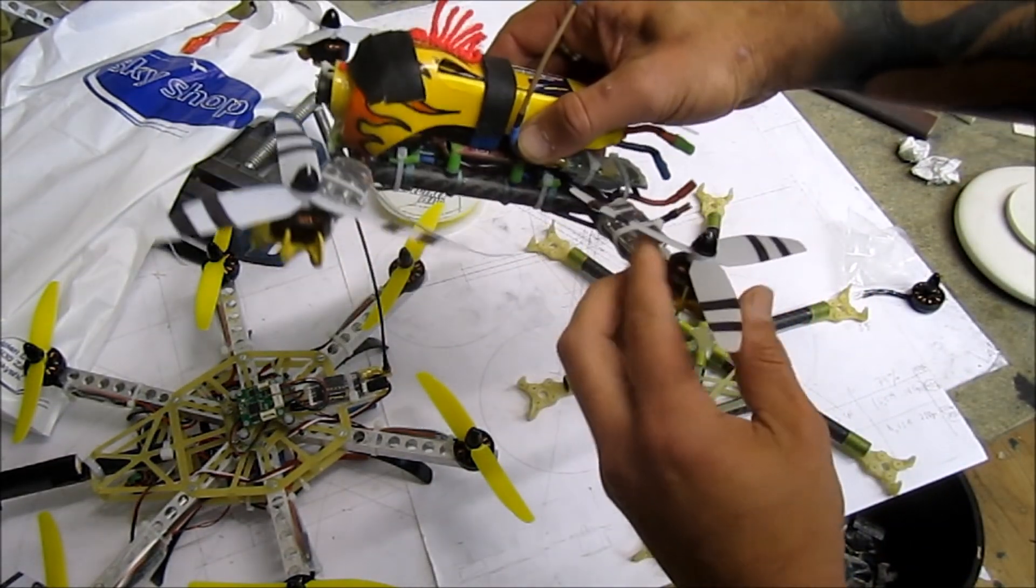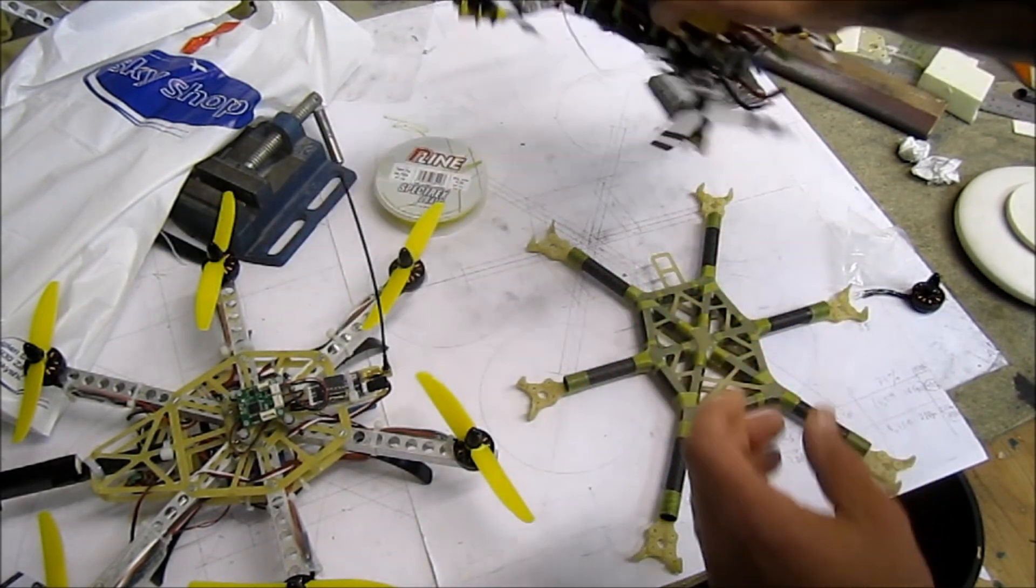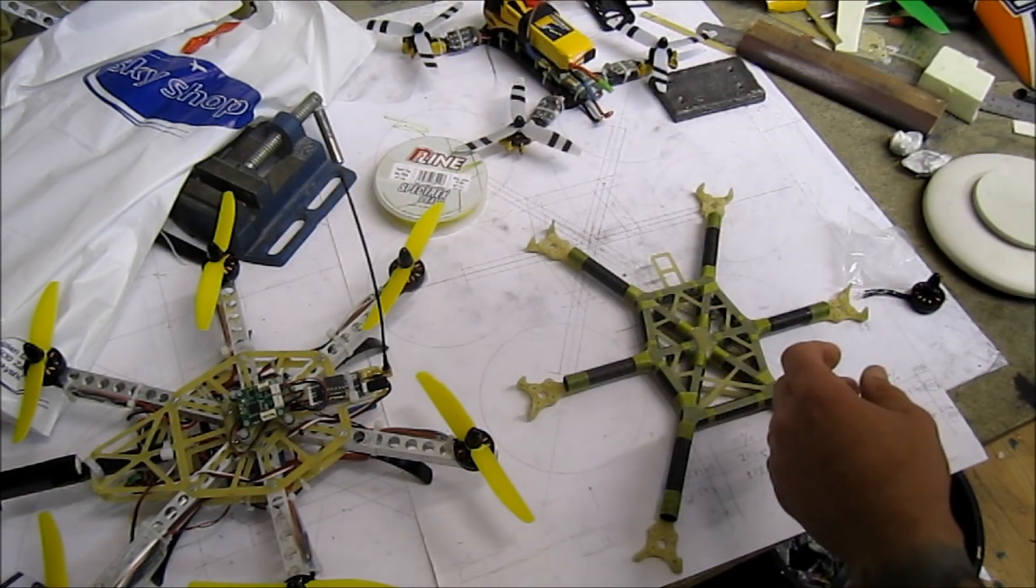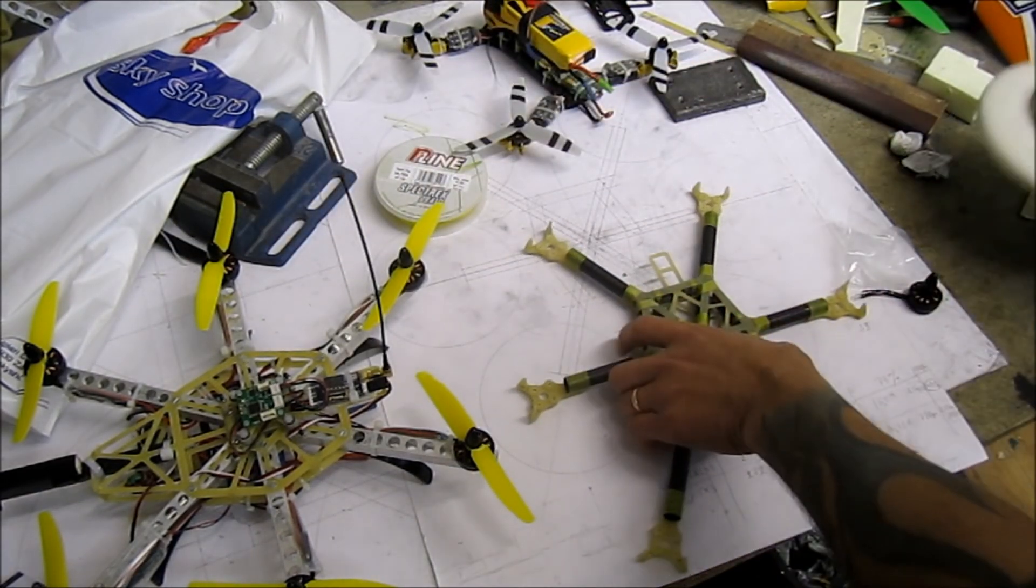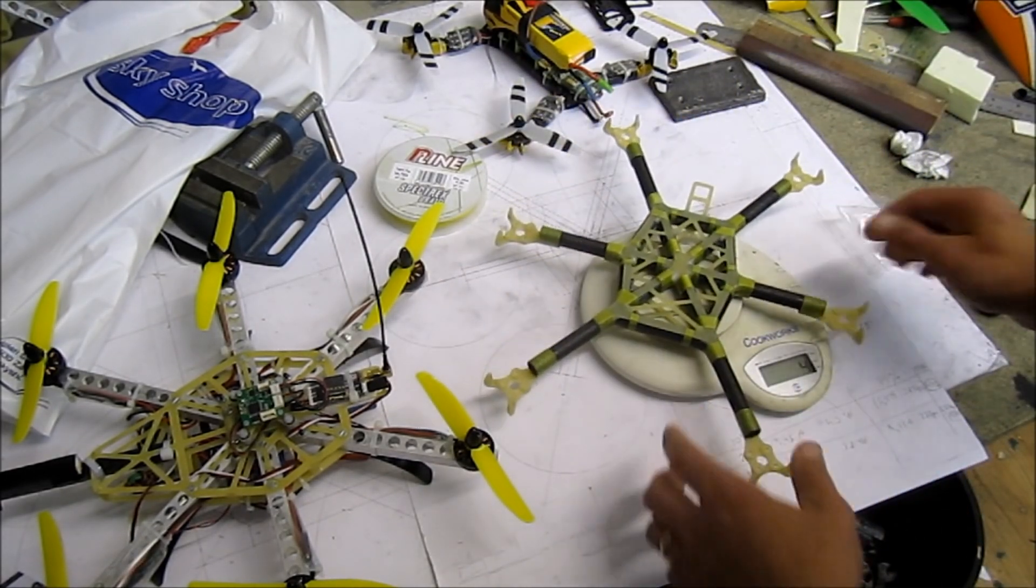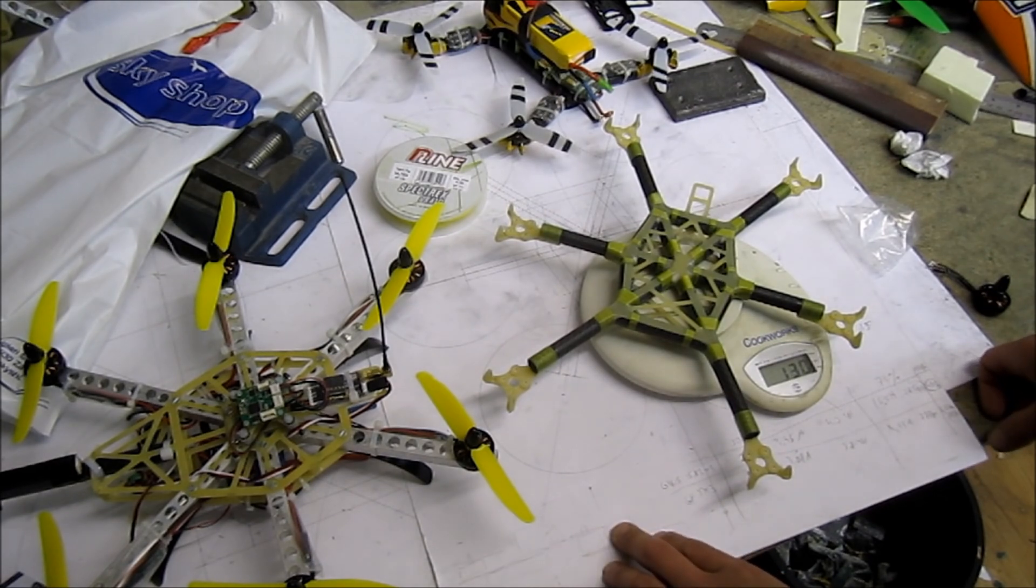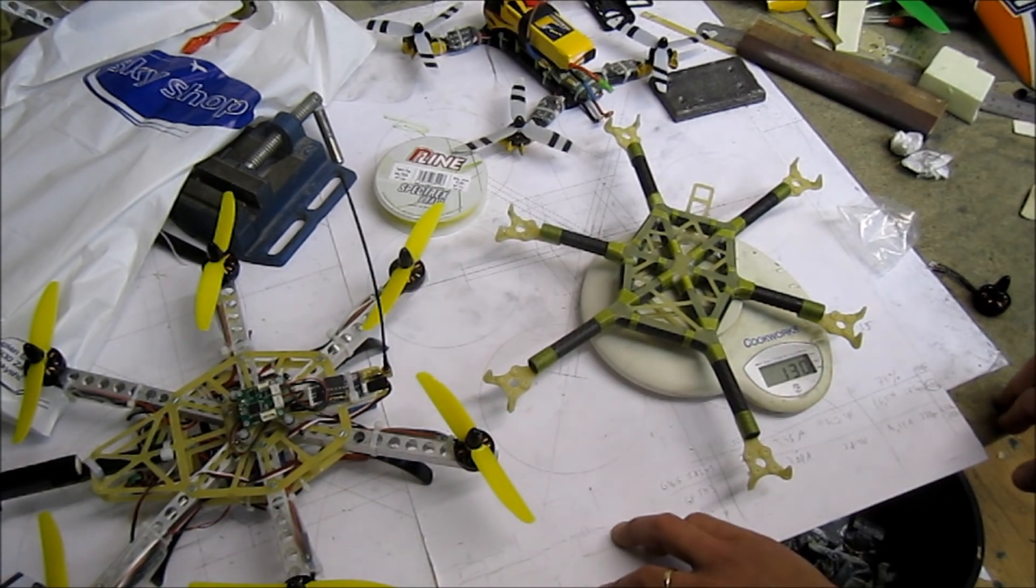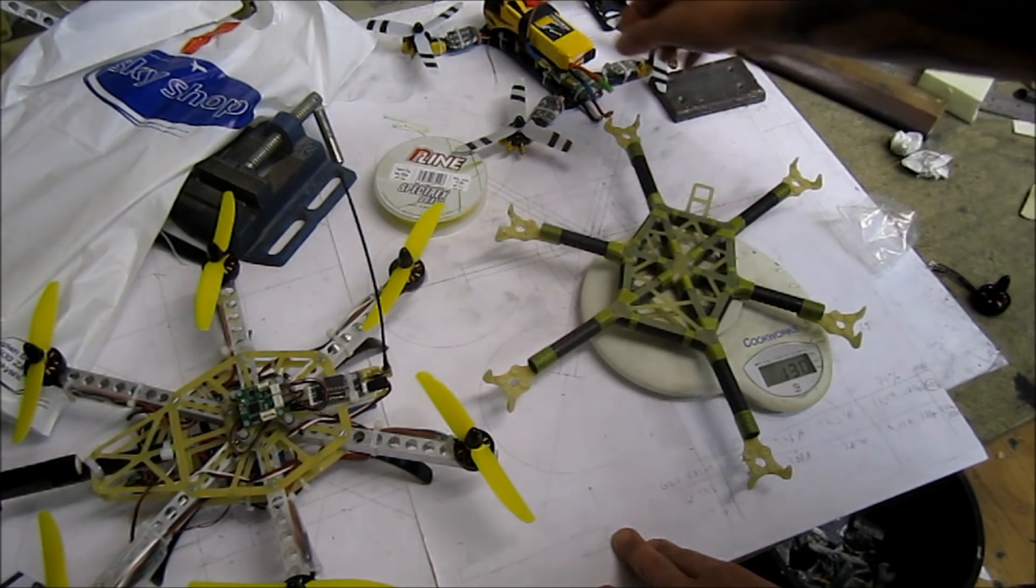Let's put it on the weighing scale. What do we have here? It was 122 grams, but I added claws and epoxy, and we have here now 130 grams of frame.